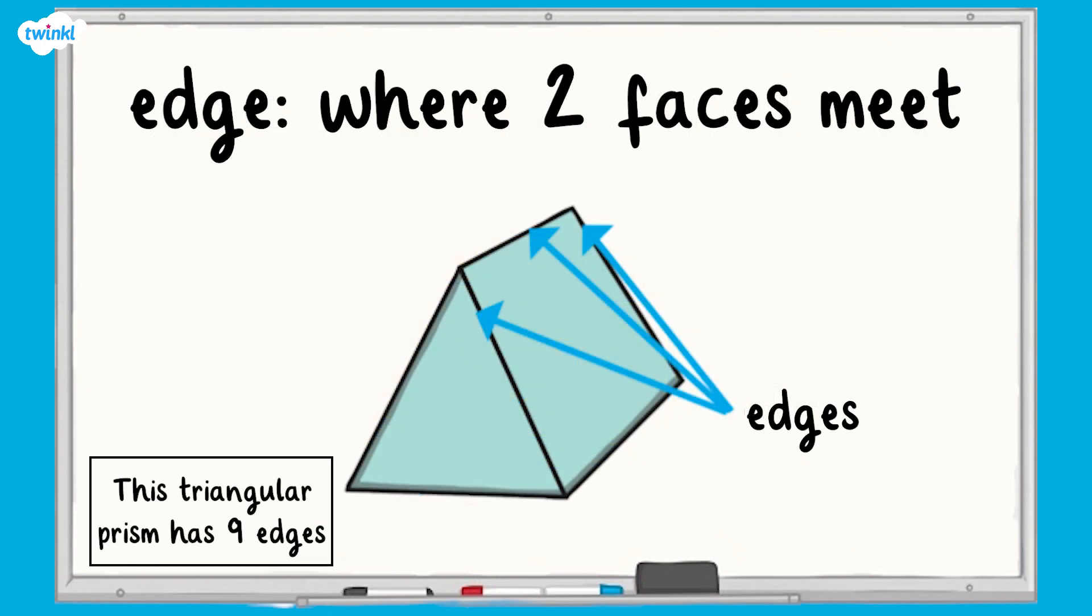An edge is the intersection of two faces. A straight line where two flat faces of a polyhedron, the 3D shape, meet. This triangular prism has nine edges.